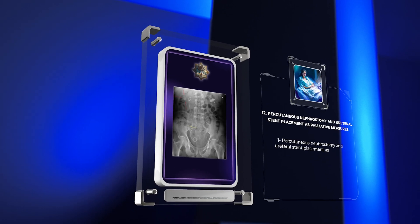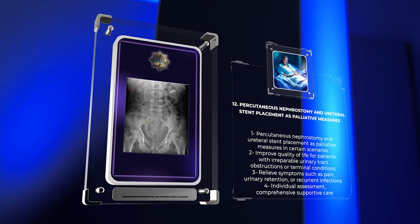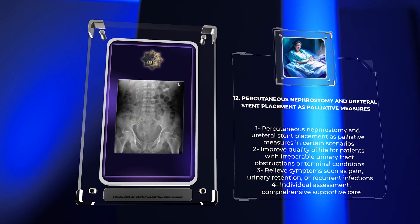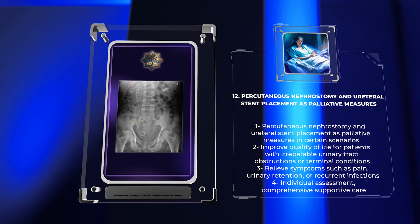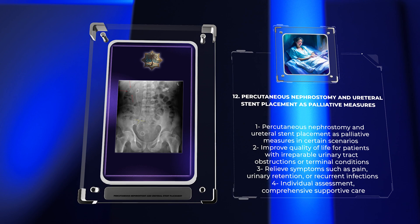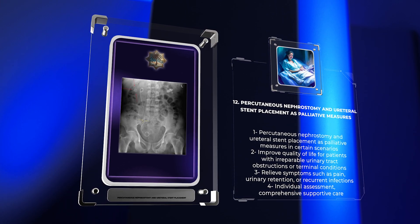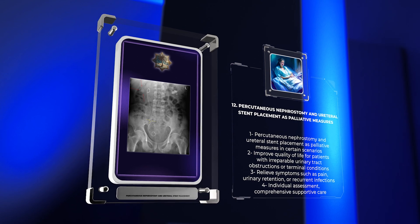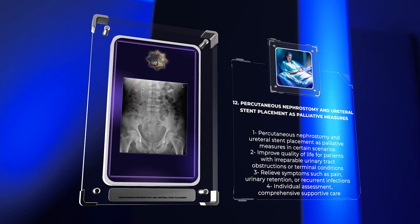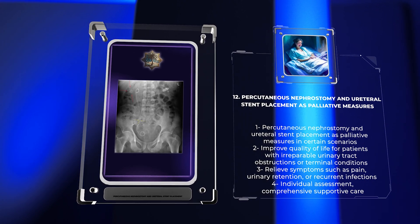In certain clinical scenarios, percutaneous nephrostomy and ureteral stent placement can serve as palliative measures to improve the quality of life for patients with irreparable urinary tract obstructions or terminal conditions. These procedures help relieve symptoms such as pain, urinary retention, or recurrent urinary tract infections in patients who are not candidates for definitive treatment. Palliative percutaneous nephrostomy and ureteral stent placement require careful assessment of individual patient needs and preferences, as well as comprehensive supportive care.